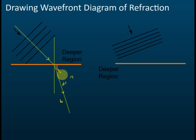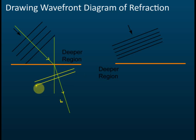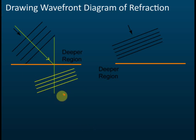After erasing the guides, we can start drawing our wavefront diagram. Let me use yellow for the wavefront diagram. Always remember the wavefront is 90 degrees — perpendicular to the directions of the wave. Also make sure that your wavelength is shorter in the shallower region. After drawing this, you can erase your guide lines.